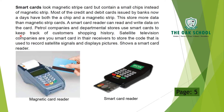Smart cards can store a lot of information about what customers bought and when. Satellite television companies use smart cards in their receivers to store the code that is used to decode satellite signals and display pictures. The magnetic card reader reads the stripe, while the smart card reader reads the chip.